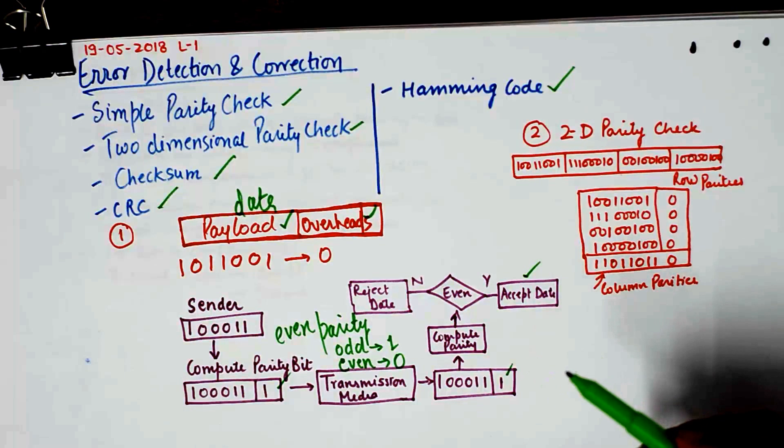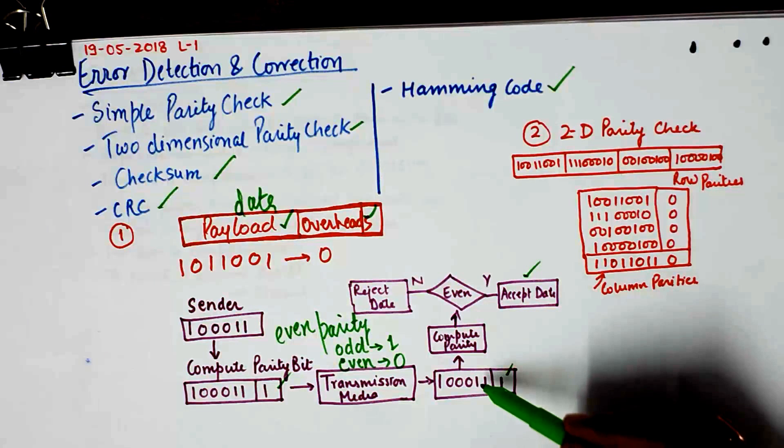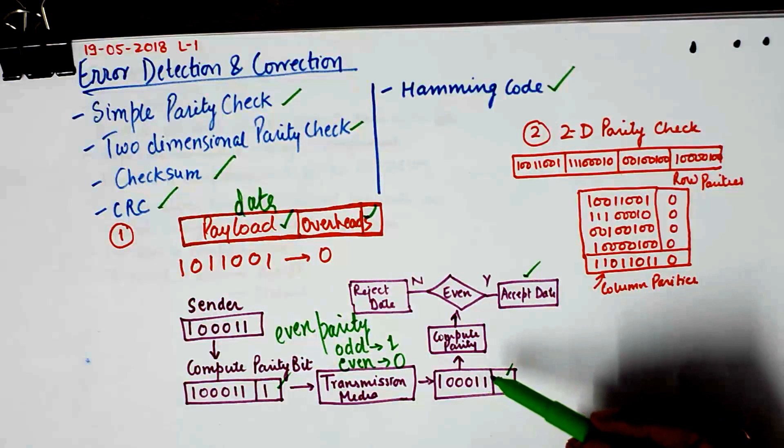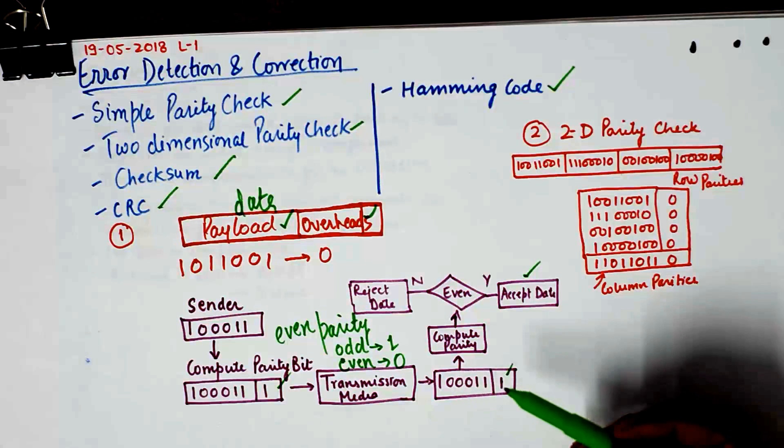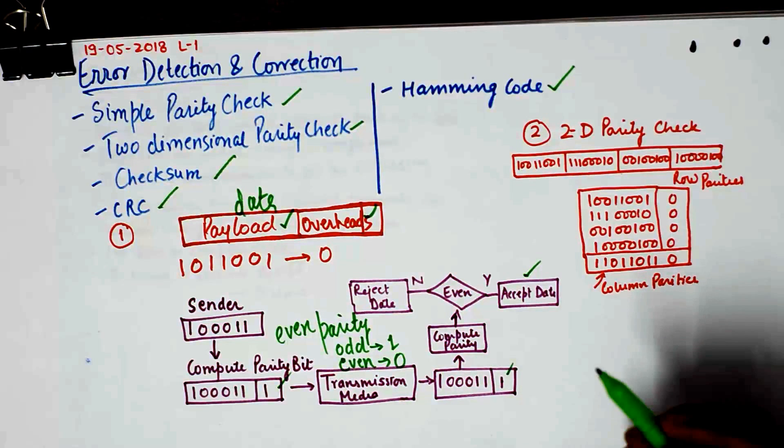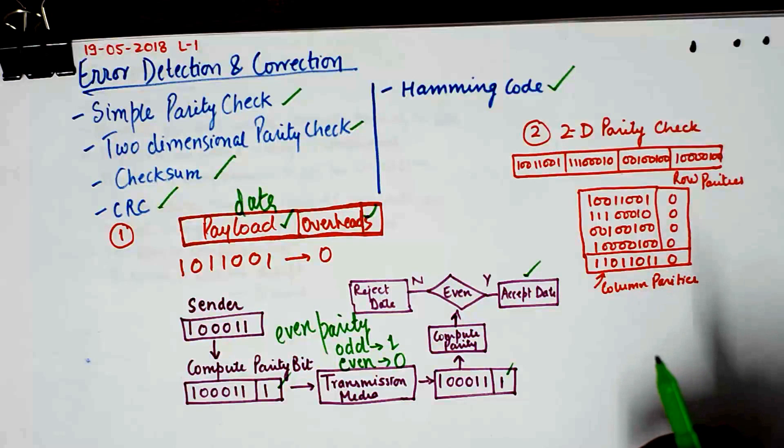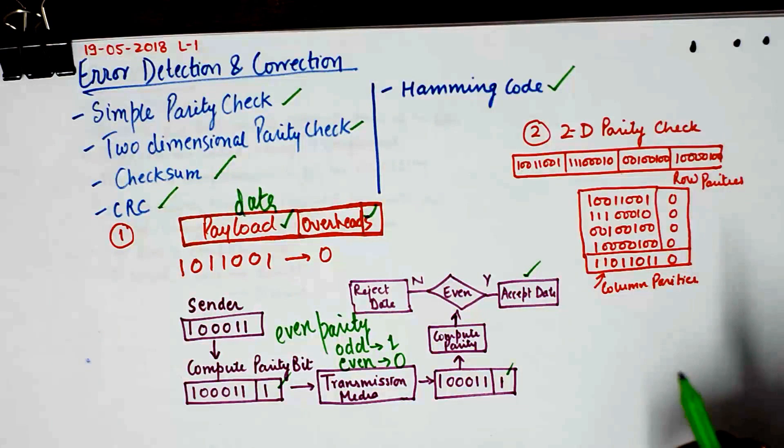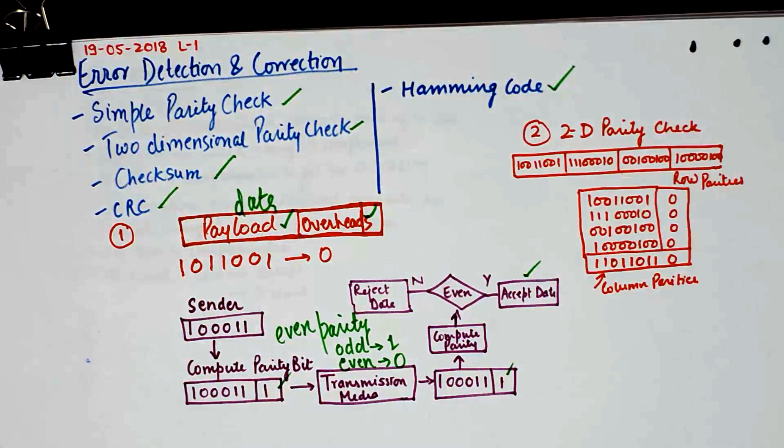However, it has a very big limitation that if two bits change simultaneously, if a one becomes a zero and a zero becomes one simultaneously, then the parity will still remain the same but the data received is pretty corrupted. So this technique was outrightly rejected by reliable networks and a more sophisticated technique which is known as 2D parity check was introduced.